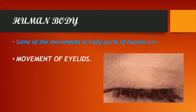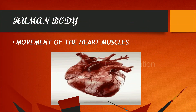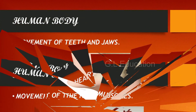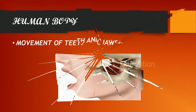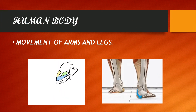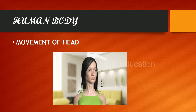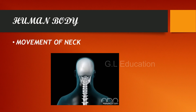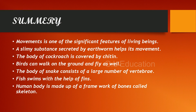Some of the movements in body parts of humans are: movement of eyelids, movement of the heart muscles, movement of teeth and jaws, movement of arms and legs, movement of the head, movement of the neck, and movement of the body overall.